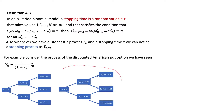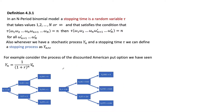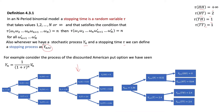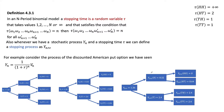Now we attach the optimal stopping time τ to this stochastic process. Using the same stopping time from before, we define the stopped process Y^τ_n = Y_{min(n,τ)}. Let's trace through: Y^τ_0 — since τ uses only two coin tosses, Y^τ_0 is just Y_0. That's 1.36, unchanged. Moving to the next node.